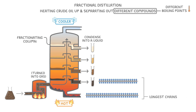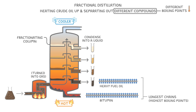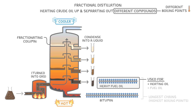The hydrocarbons with the longest chains — so the most carbons — have the highest boiling points, and so they'll quickly condense back into a liquid and drain out of the column early on, because it's not hot enough to keep them in their gaseous states. These are things like bitumen, which we use to surface our roads, and heavy fuel oil, which can be separated further and used for things like heating oil, fuel oil, or lubricating oil.